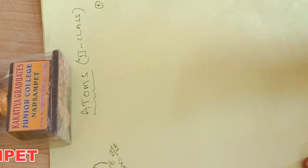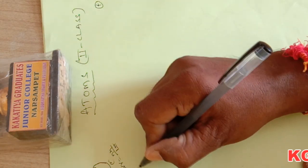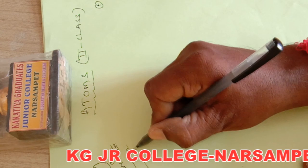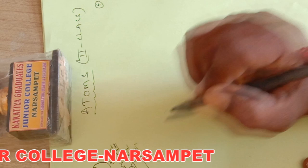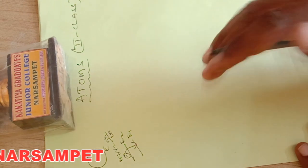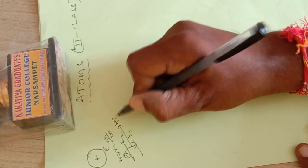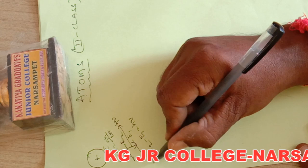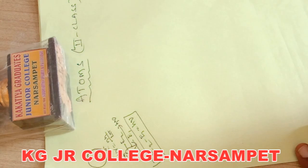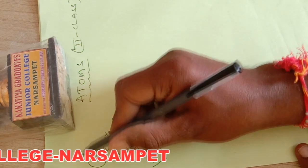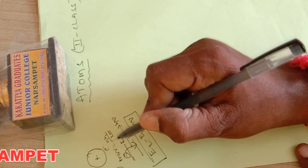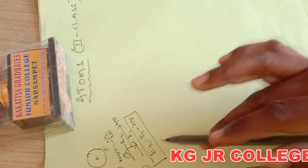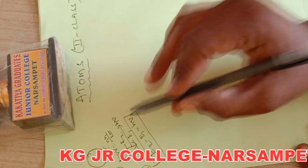The third postulate is that an electron jumps from a higher energy state to a lower energy state. Some energy is evolved, and that energy is equal to the photon energy hν, so E2 minus E1 equals hν. This photon energy equals the difference of two energy levels.